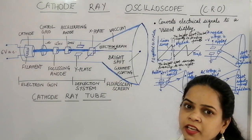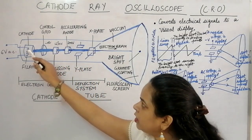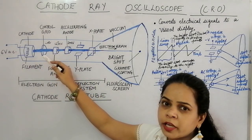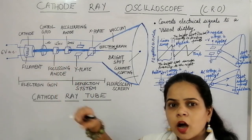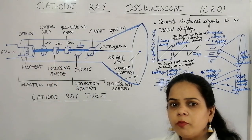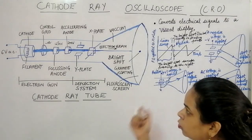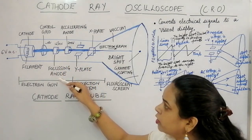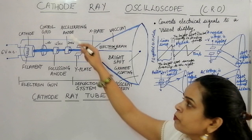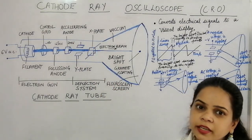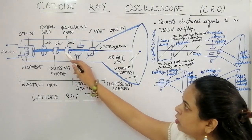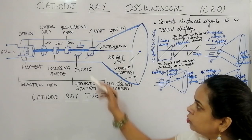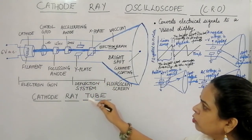So the cathode liberates electrons, the control grid's negative potential lets us control beam intensity, and the two anodes first focus then accelerate the electron beam. The velocity of the electrons coming out of the accelerating anode is much greater than when liberated by the cathode. This entire assembly up to the anode constitutes the electron gun.